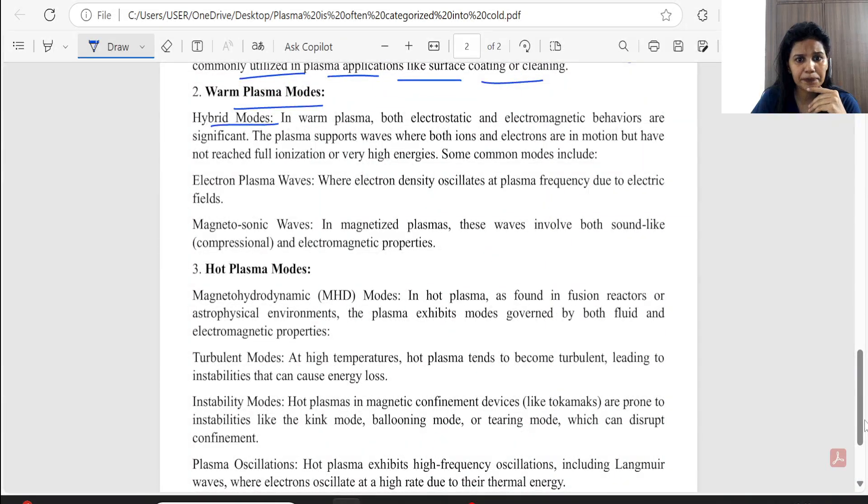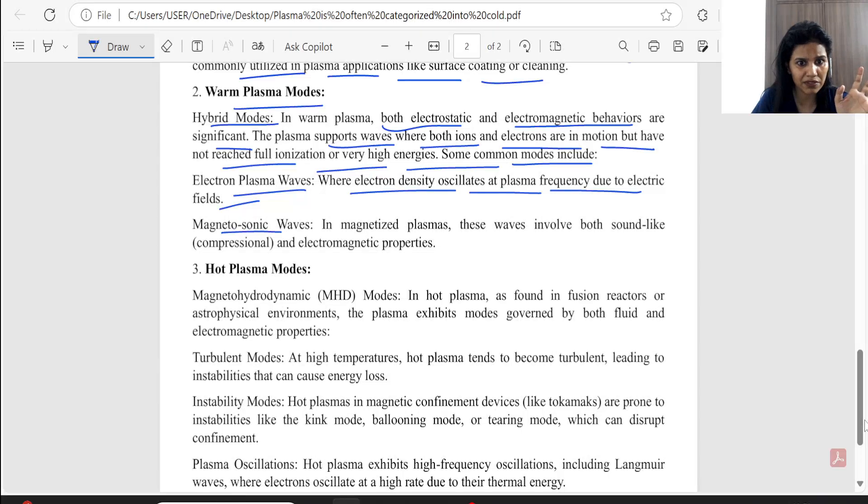Now, warm plasma comes in hybrid mode. In both electrostatic and electromagnetic behavior are significant, because we saw that the electrostatic was dominating. The two are significant. The plasma support waves. Both ions and electrons are in motion, but have not reached full ionization and very high energies. Some common modes include electron plasma wave, magnetosonic wave. Electron density oscillates at plasma frequency due to electric field, which we had taught in plasma frequency.